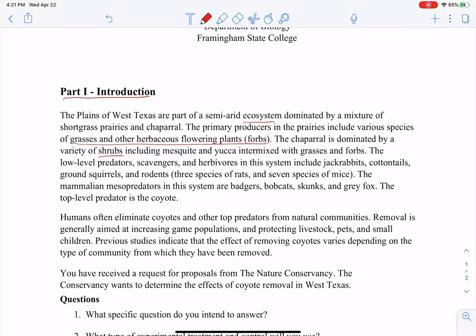The low-level predators, so these would be the primary consumers, scavengers and herbivores include jackrabbits, cottontails, ground squirrels, and rodents. There are three species of rats and seven species of mice.